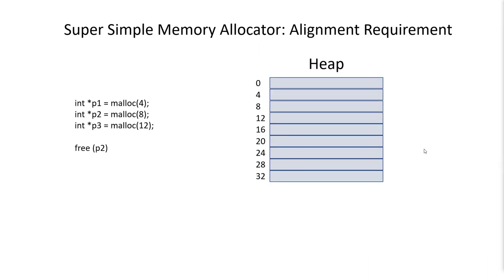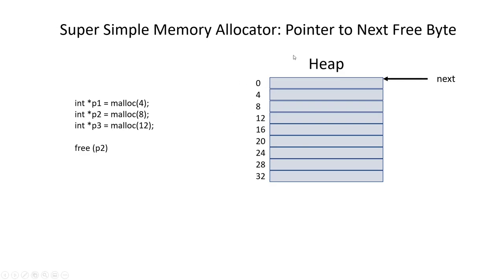Next I want to introduce a super simple memory allocator. This one has problems we'll see in a moment, but I want to walk through it to give you an idea. One of the first topics I need to introduce is the concept of an alignment requirement. Most architectures require that when you use malloc and reserve space on the heap, the pointer returned must be a multiple of some number — eight is really common. Using a model that keeps a pointer to the next free byte: when I do the first allocation of four bytes, I just allocate four bytes on the heap and return a pointer to P1.